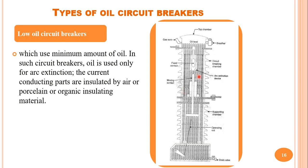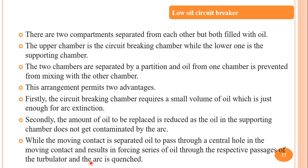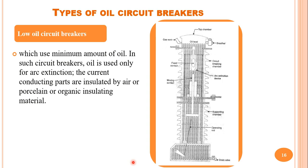The arc is mainly produced in the top chamber, so only a small portion of oil needs to be replaced after the operation of the circuit breaker. When the moving contact is separated, oil passes through the central hole in the moving contact, forcing a series of oil jets through the passages of the turbulator, and the arc is quenched. The moving contact is a hollow cylinder and oil is passed from the moving contact to the arc path, extinguishing the arc.